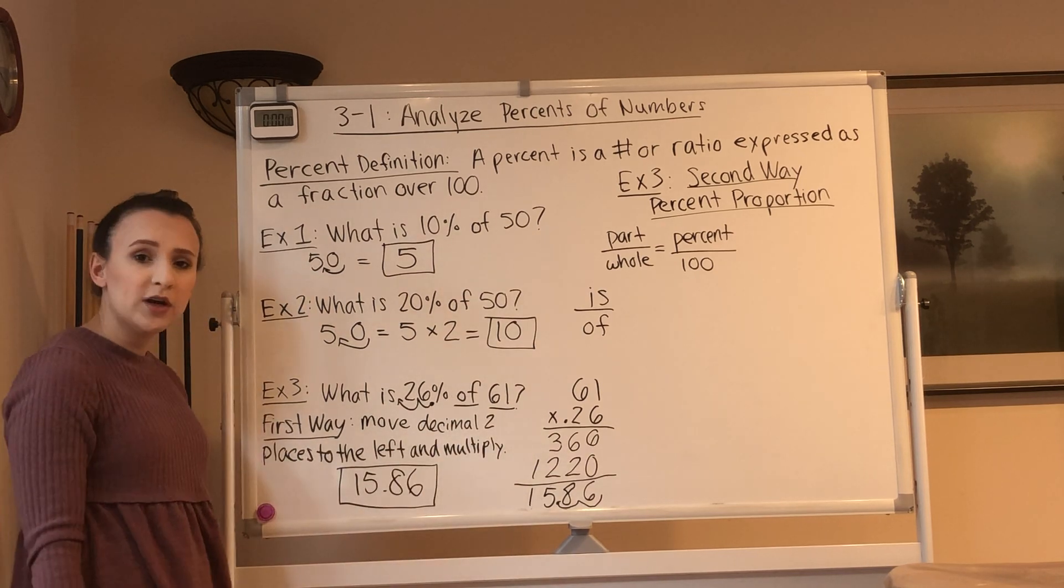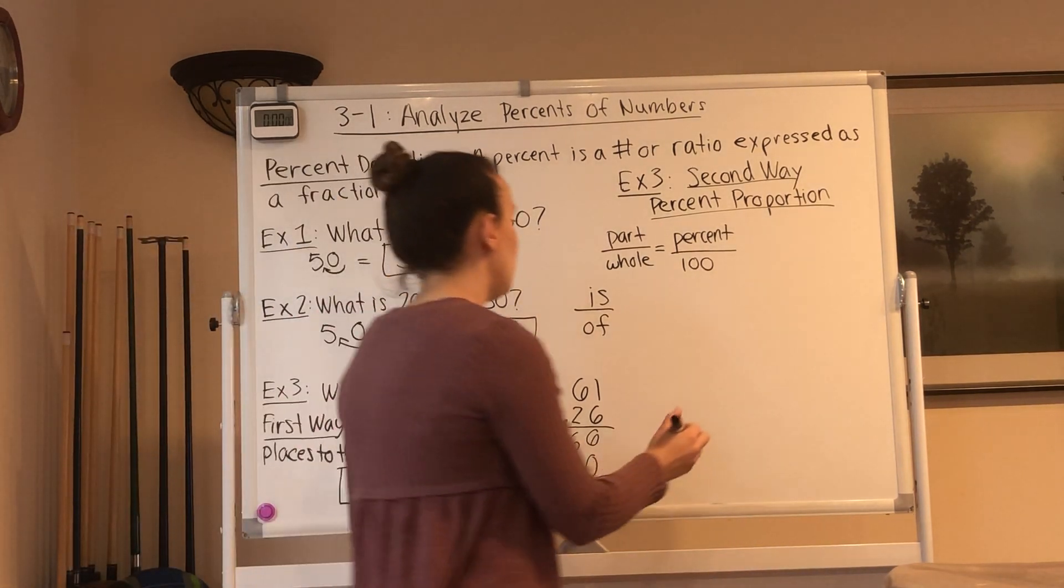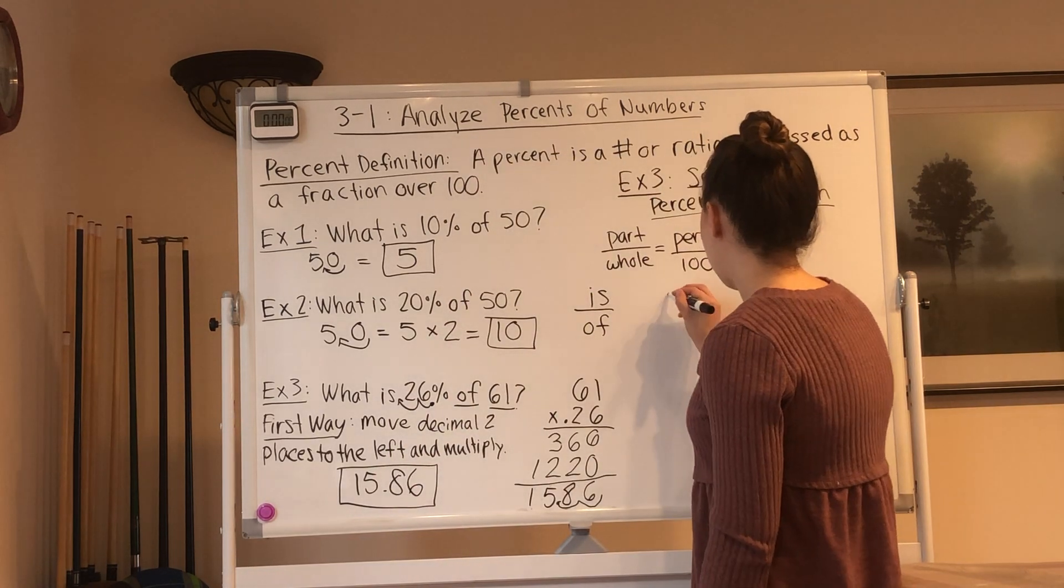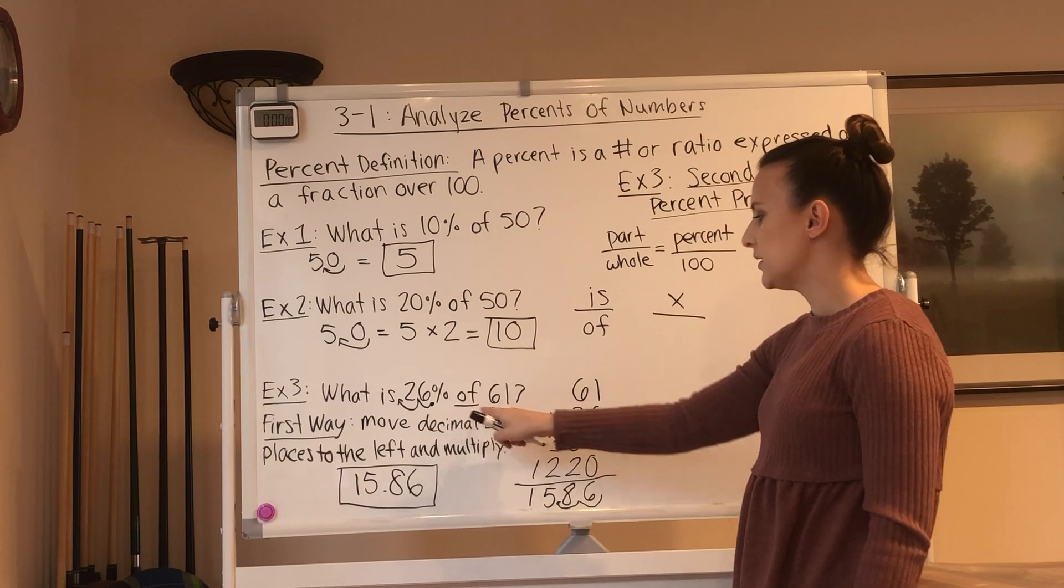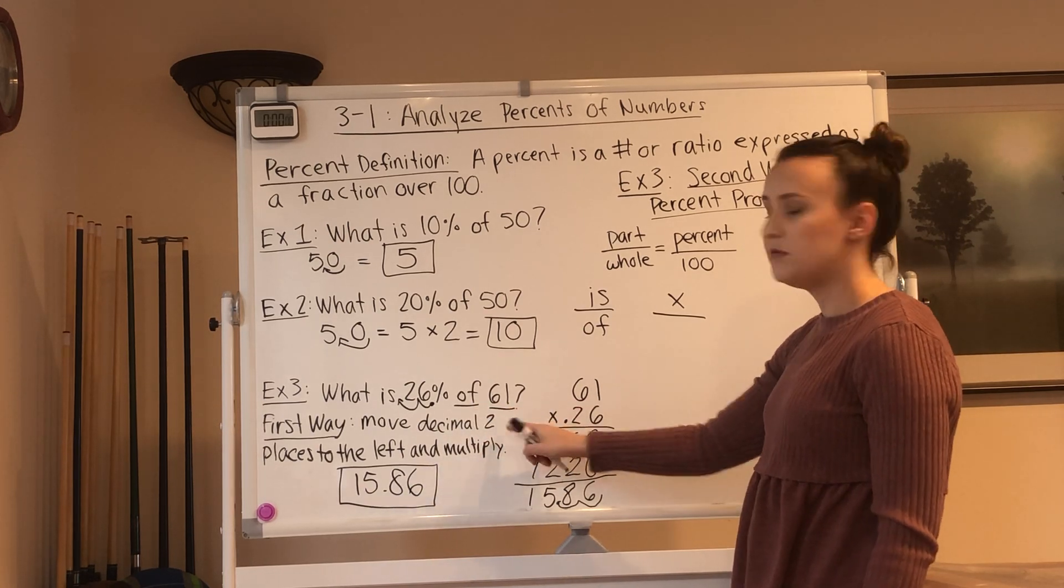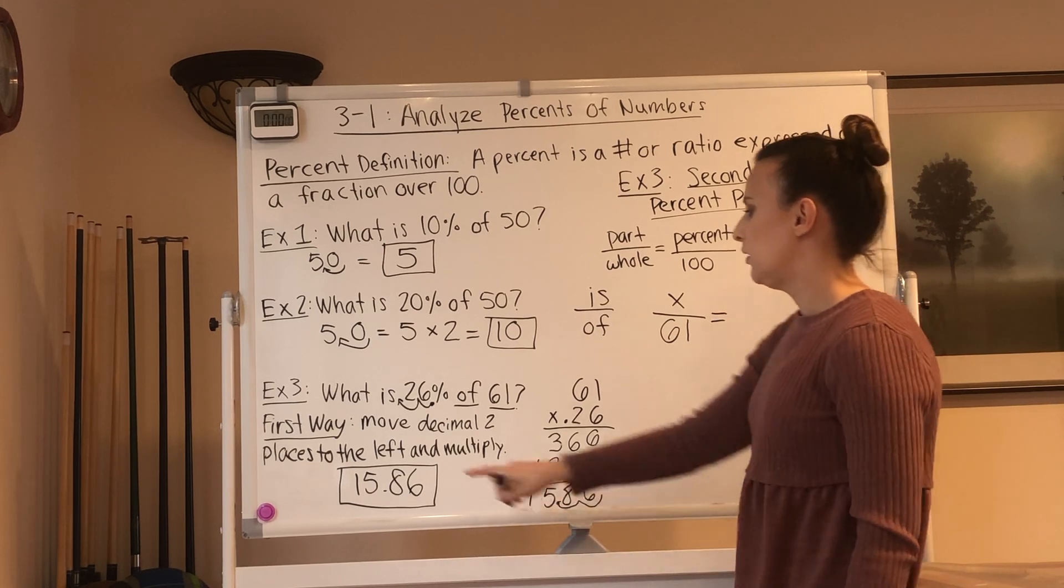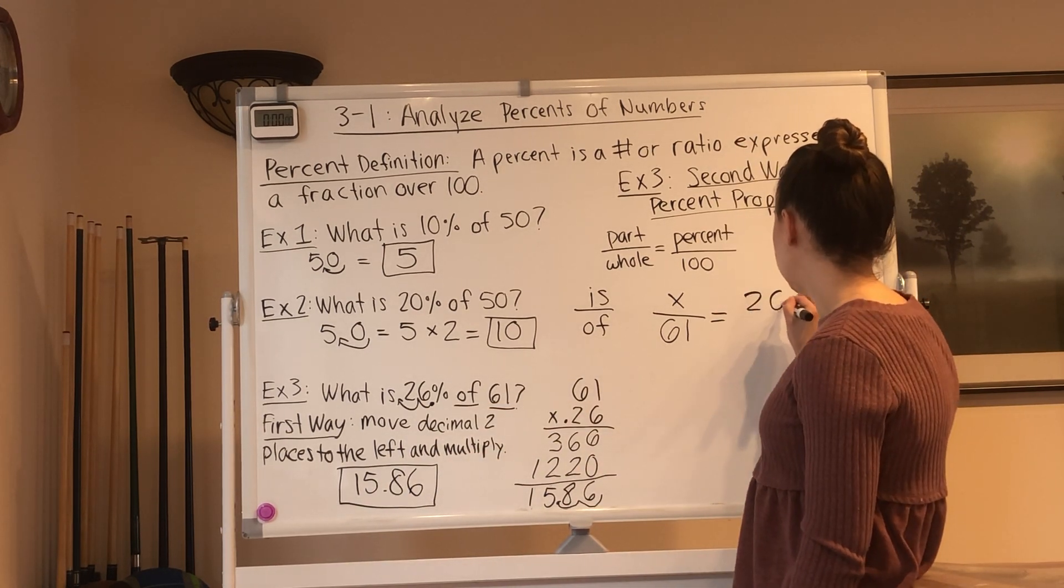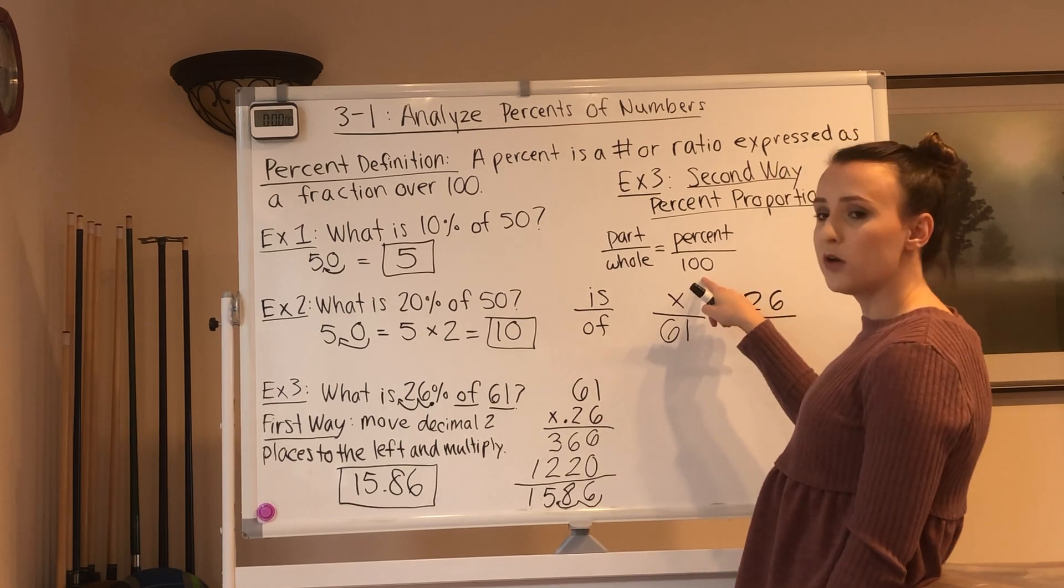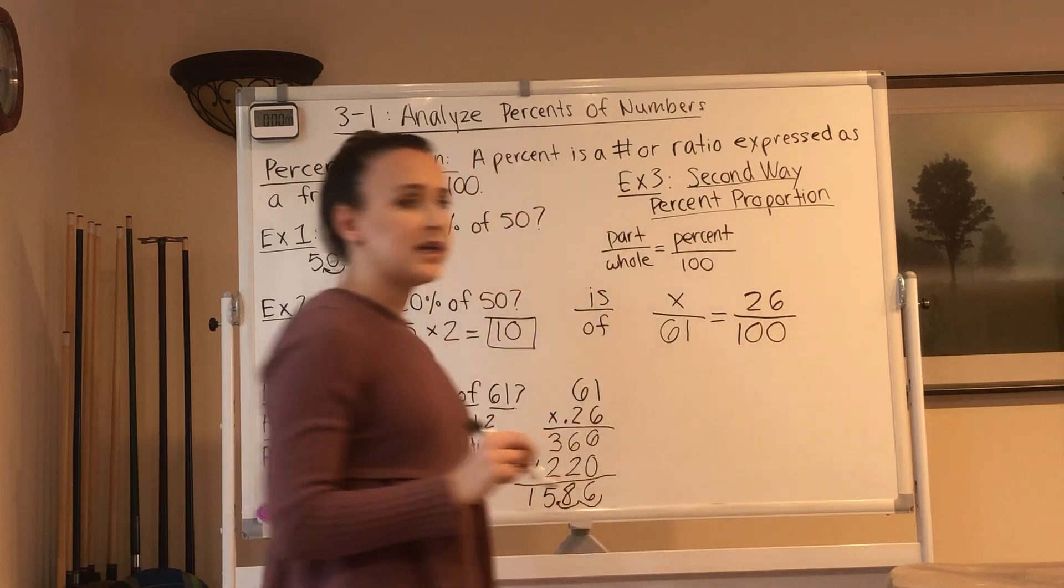So we're looking for the part. So what you're going to do is we don't know the part, so we're going to call that x. The whole is 61 because it says of 61 equals the percent. The percent is 26%. So we're going to write 26 over 100. That's our percent proportion.